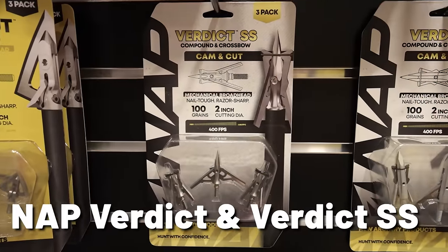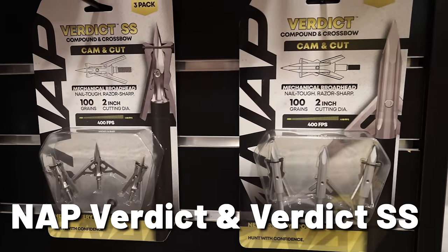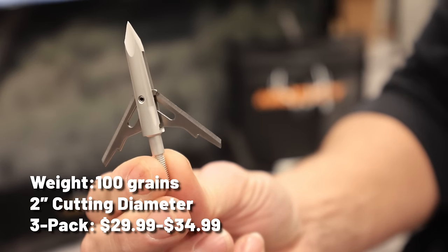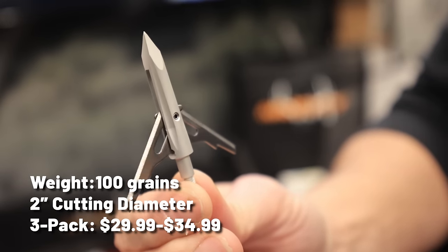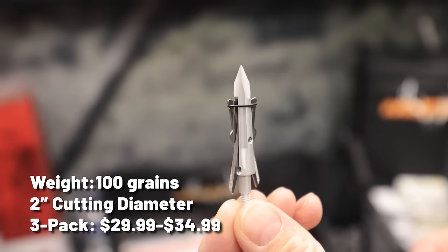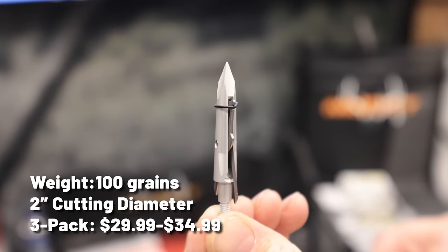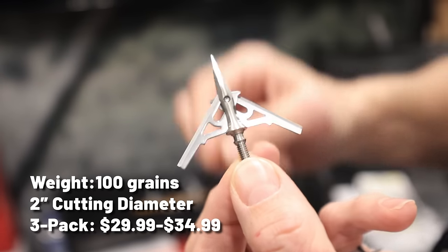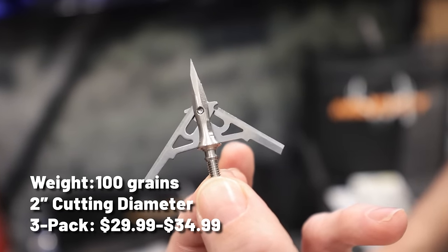If mechanical broadheads are your thing, check out the NAP Verdict and Verdict SS. These are rear-deploying mechanicals with extra-large cutting diameters. The Verdict measures just 11 sixteenths of an inch wide in flight and deploys to a full 2-inch cut on impact. The Verdict utilizes two stainless steel blades that are 32 thousandths thick and they weigh 100 grains. The standard aluminum ferrule Verdict retails for $29.99 for a three-pack while the stainless steel version will set you back $34.99.